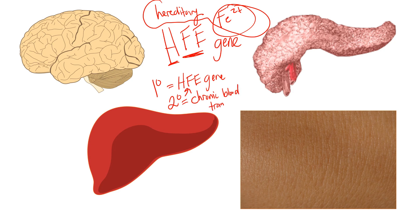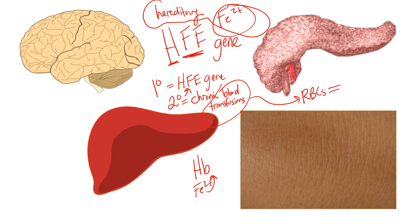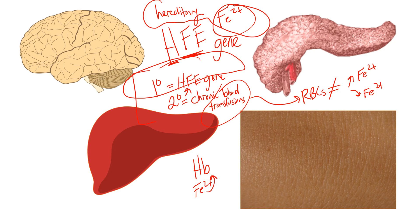With chronic blood transfusions, you're repeatedly giving the patient blood, which is mainly composed of hemoglobin. Hemoglobin contains a heme component that requires iron. When those transfused red blood cells eventually die and are broken down — for example by macrophages in the spleen — they release all of that iron into storage, causing iron overload. Primary hemochromatosis is the type most likely to appear on exam questions.